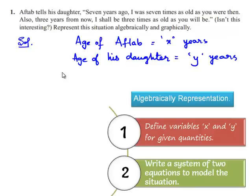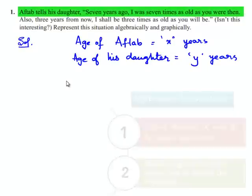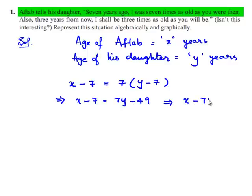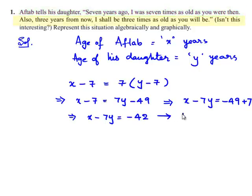According to the first condition, before 7 years, the age of Aftab would be x minus 7, and this is equal to 7 times the age of his daughter before 7 years, which is y minus 7. This implies x minus 7 equals 7y minus 49. On rearranging, we get x minus 7y equals minus 42. Let this be equation number 1.